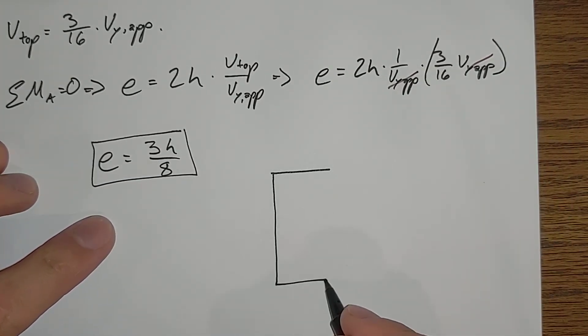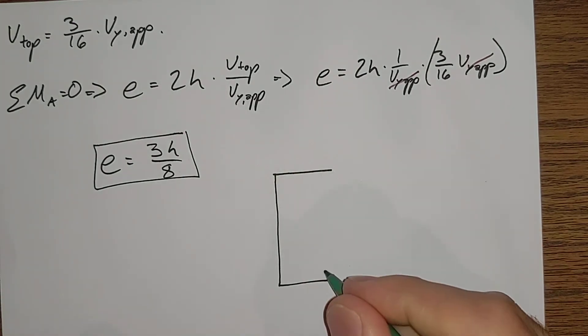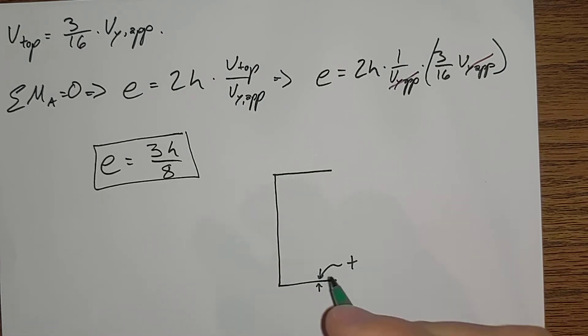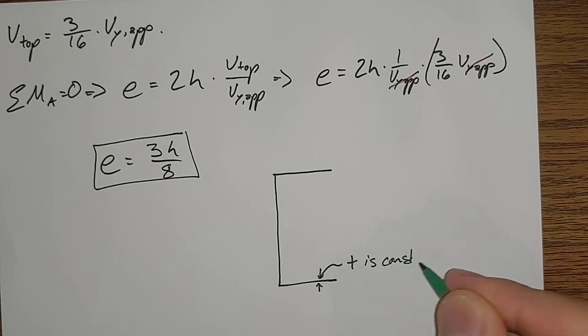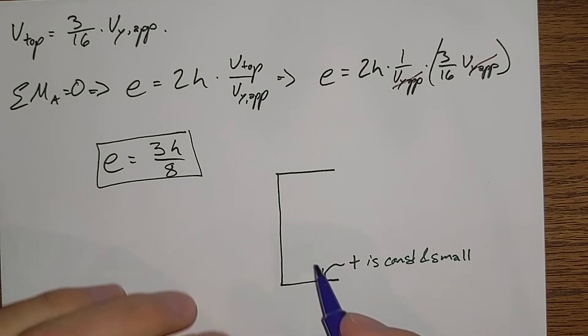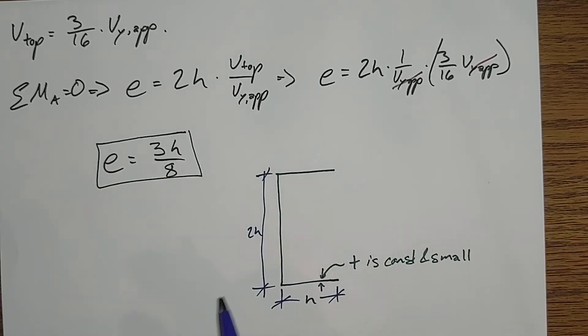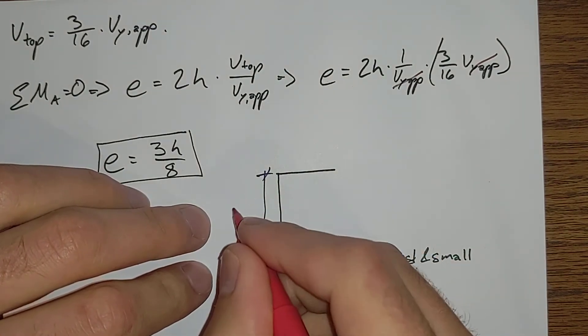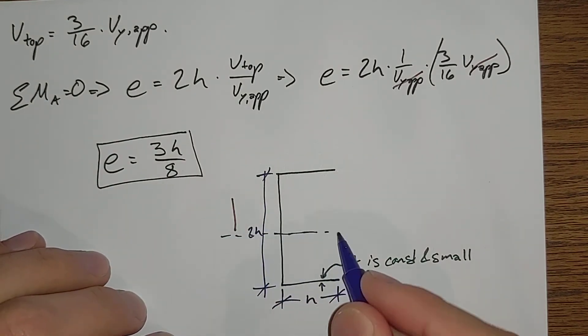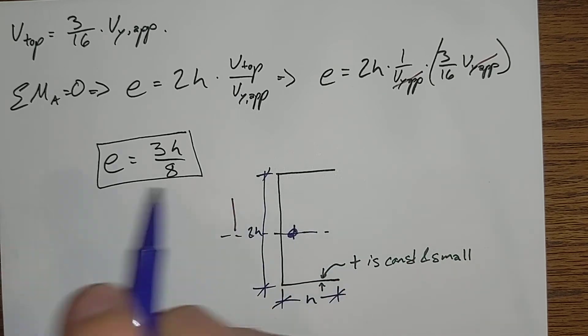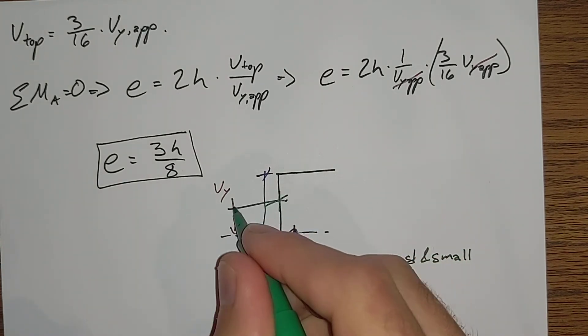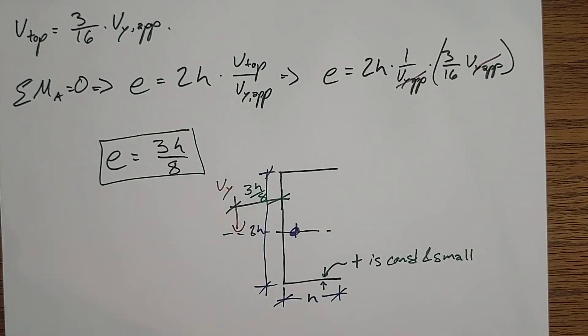We are left with e equals 3h over 8. So, again, if we've got our thin shape here, t is constant and small. And we've got h and 2h. Then V_applied comes out here, V_y comes at an eccentricity of 3h over 8.